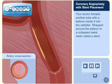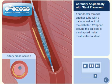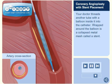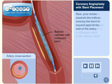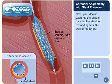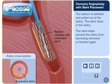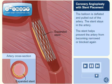Your doctor threads another tube with a balloon inside it into the catheter. Wrapped around the balloon is a collapsed metal mesh called a stent. Next, your doctor expands the balloon, causing the stent to expand against the wall of the artery. The balloon is deflated and pulled out, and the stent stays in the artery, helping prevent it from becoming narrowed or blocked again.